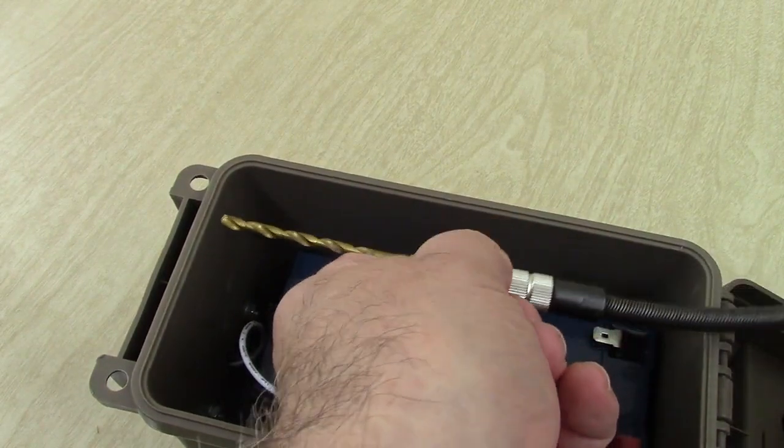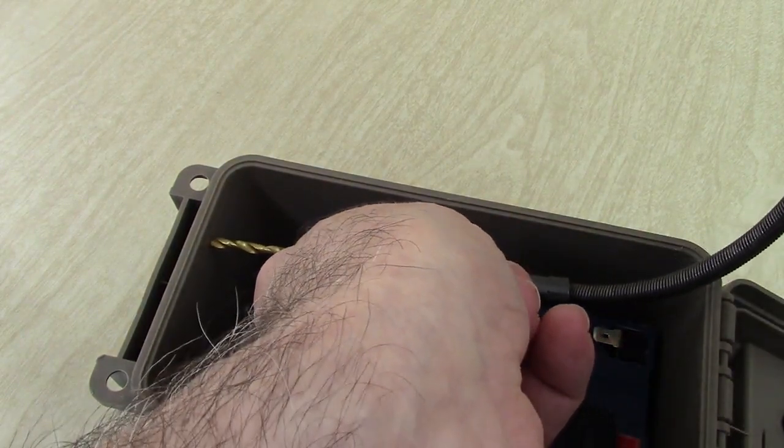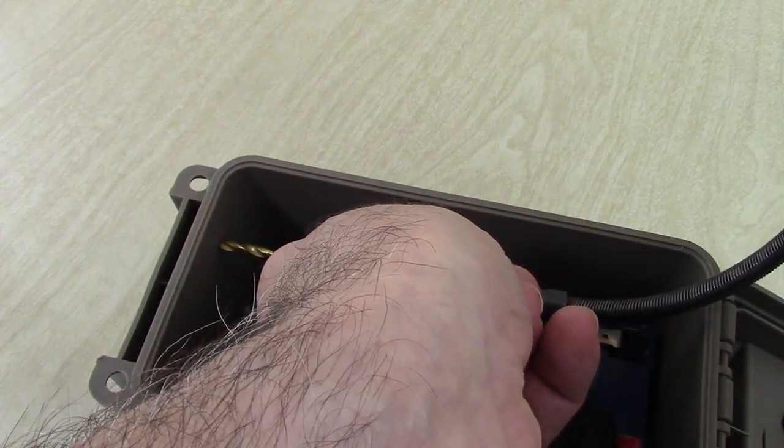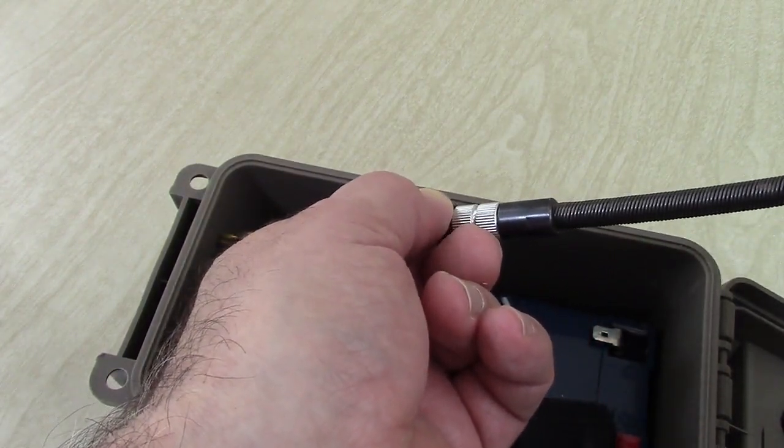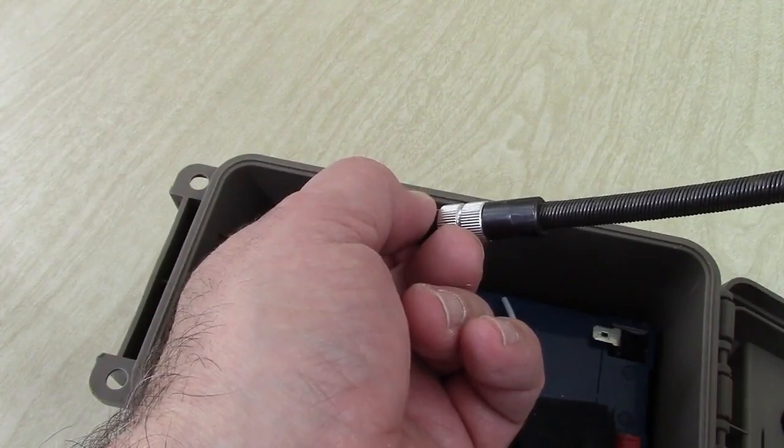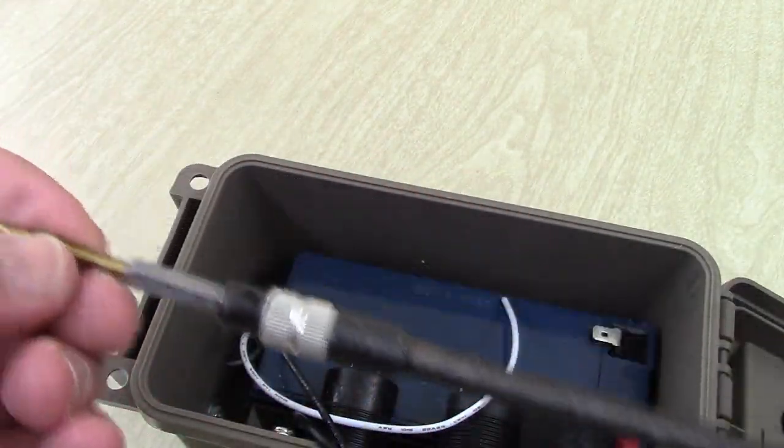I will use this drill bit right here, which is like maybe 5-32nds and I'm going to install that on a flexible shaft. So once I get it in there like that, it will kind of bend and I can get a straight through. Instead of drilling it at an angle, I can drill it perpendicular to that plane.